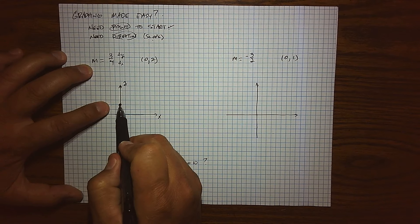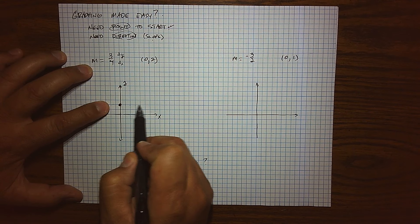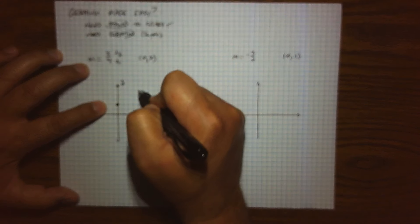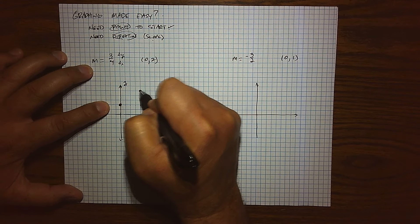So I can start by moving over 1, 2, 3, 4 units, and then up 1, 2, 3. And there would be another data point on the graph.